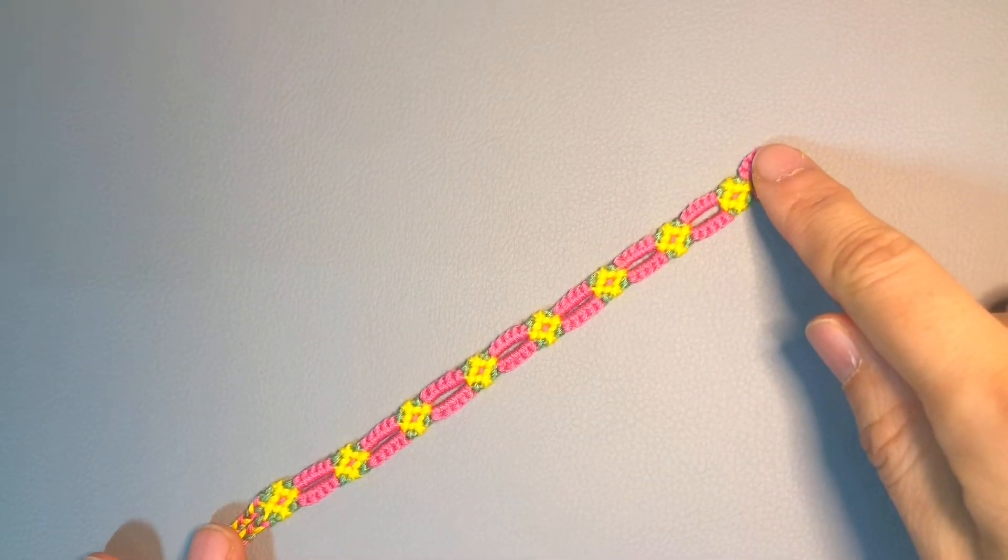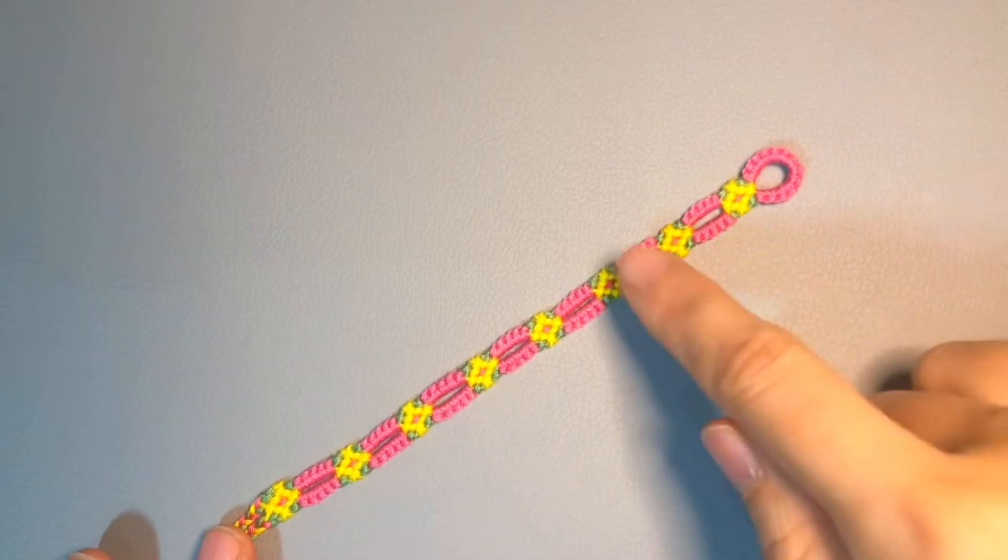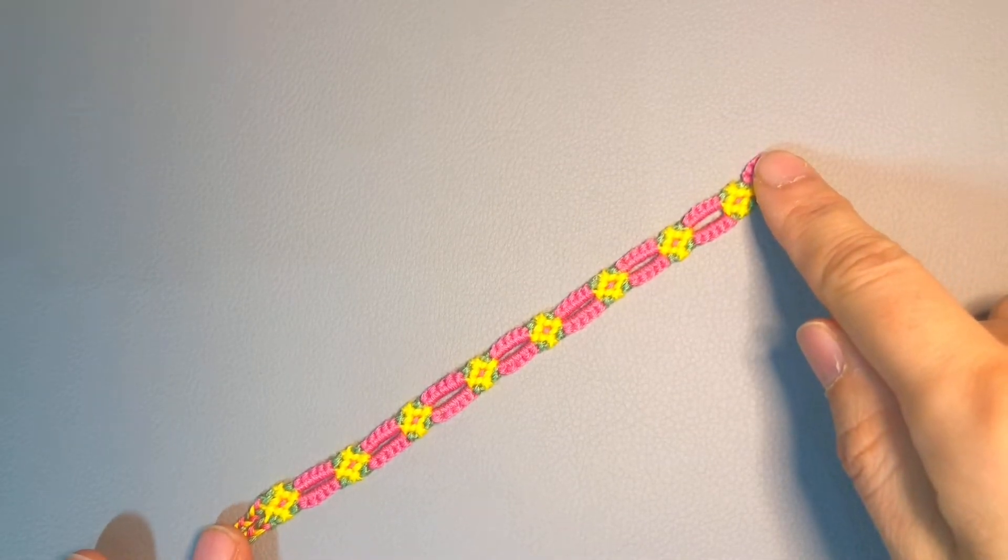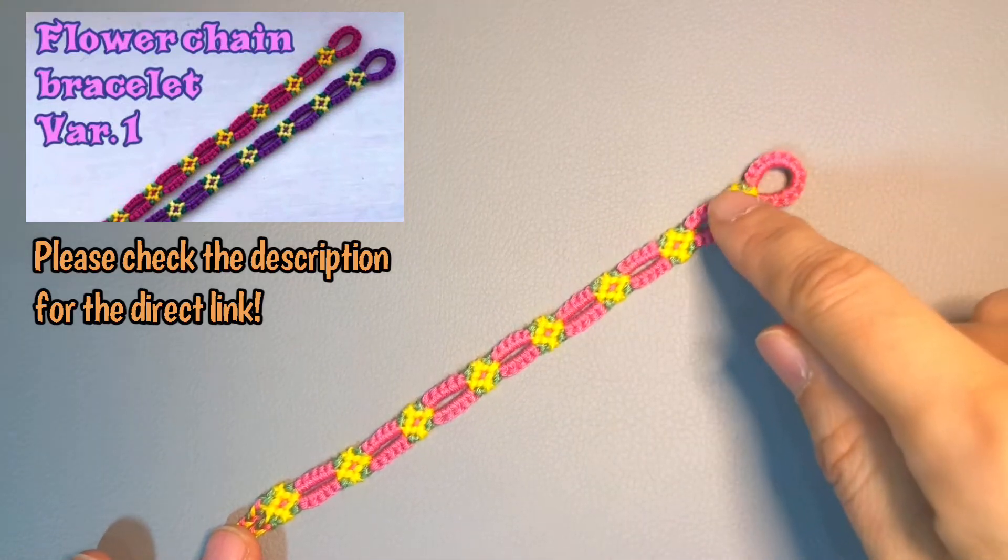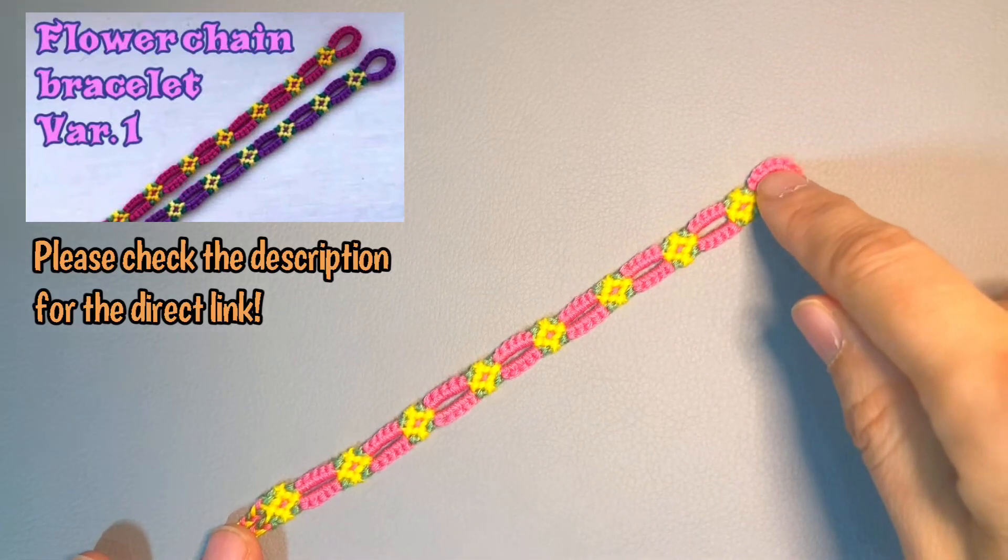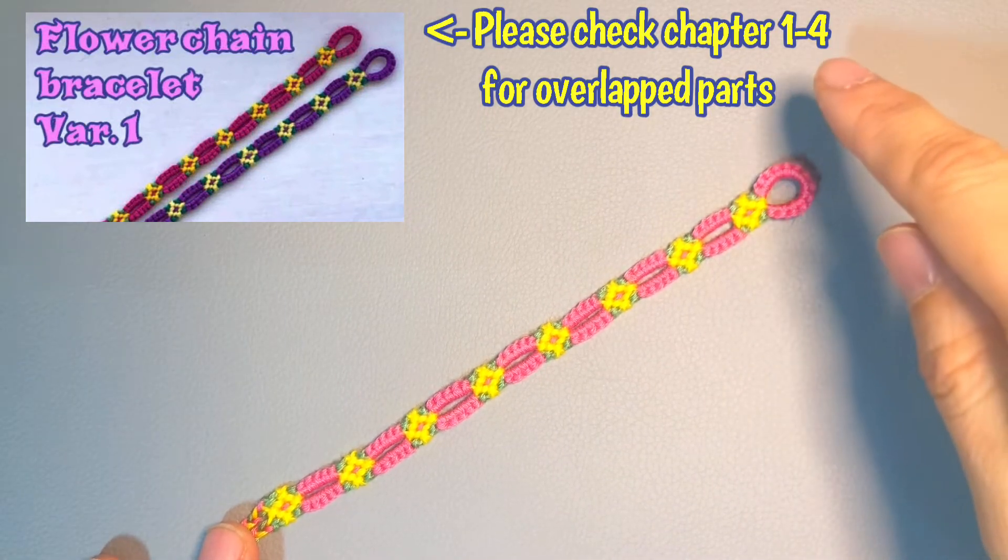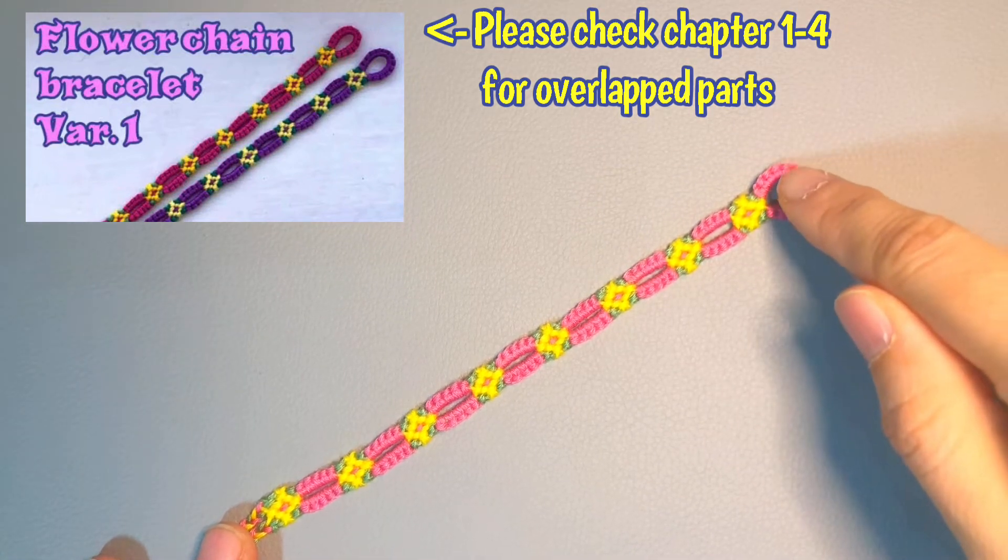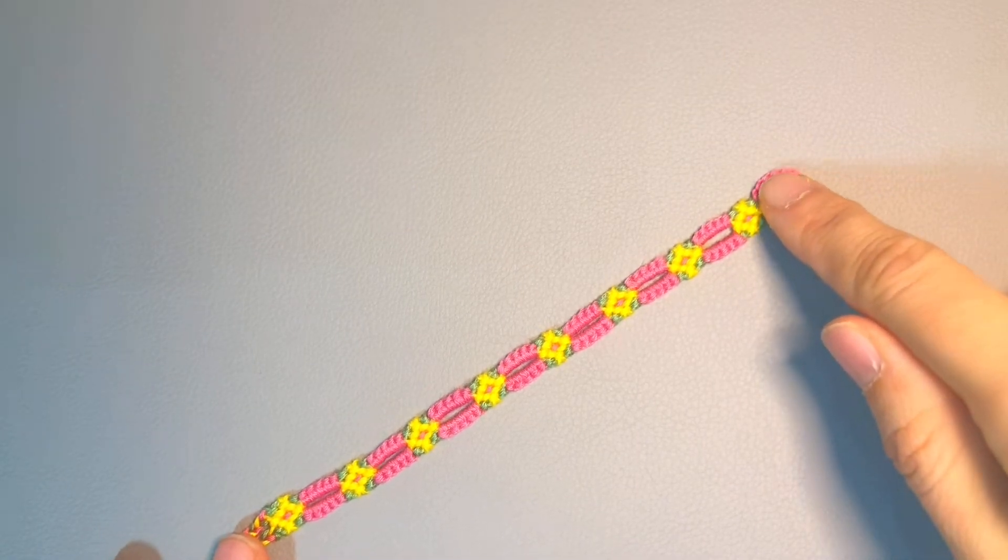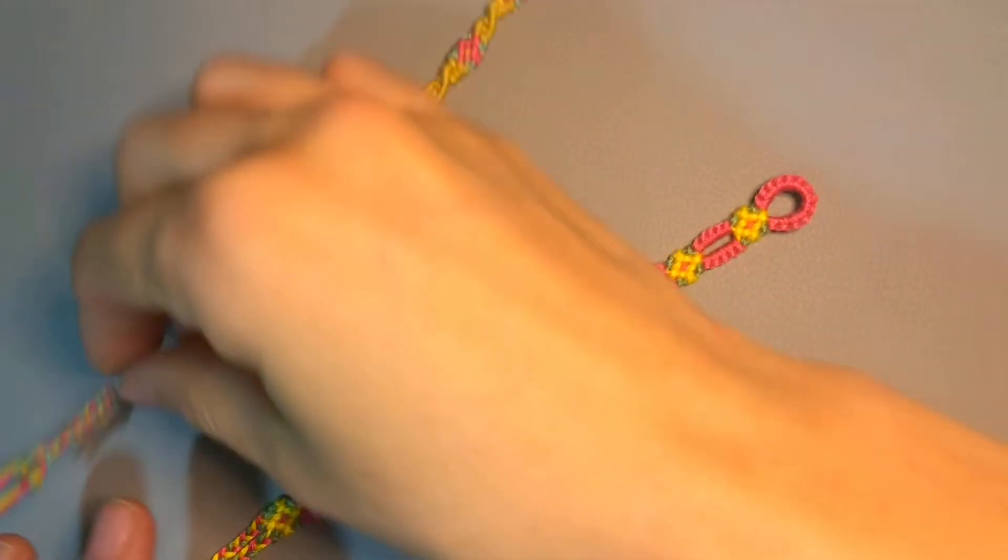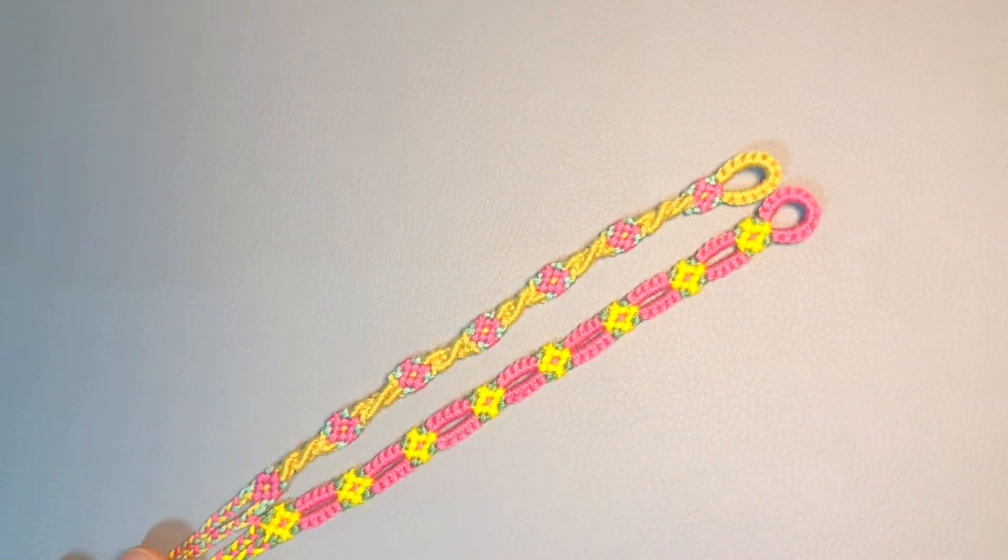For this tutorial I use the same colors, very similar colors pink, yellow, and green. Up to the part that I just explained in the next clip, please check the tutorial I posted on March 10th and follow chapter 1 to chapter 4. I explained there the number of threads, the length, how to make the loop, and how to make the flower. In the next clip I'll start from the spiral part. So let's get started.